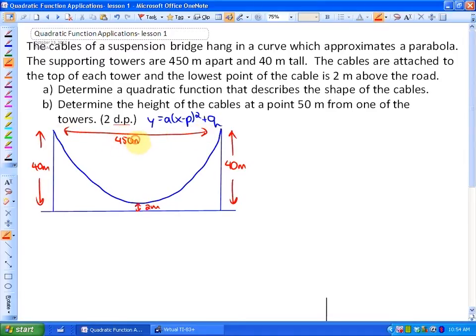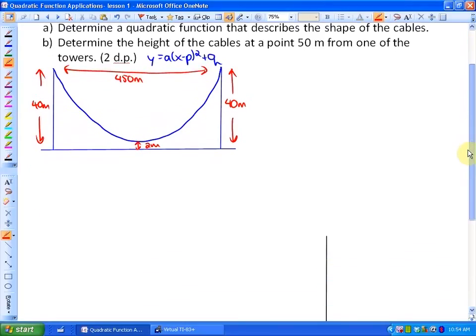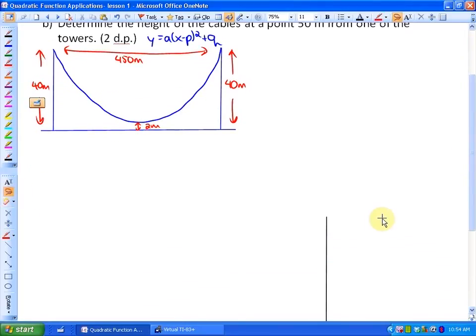Now before we can actually represent this in vertex form, or determine a quadratic function, we have to somehow place this on the x and y axis. At this point we don't have that, it's not given to us, so we get to choose actually where this is going to be.